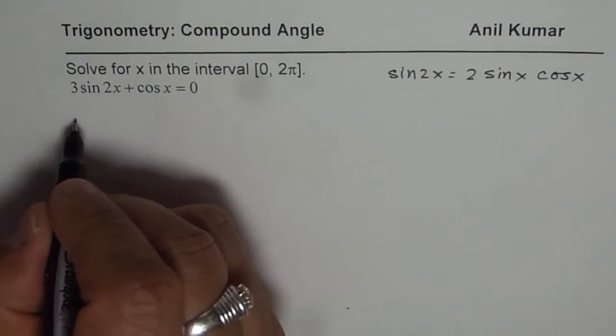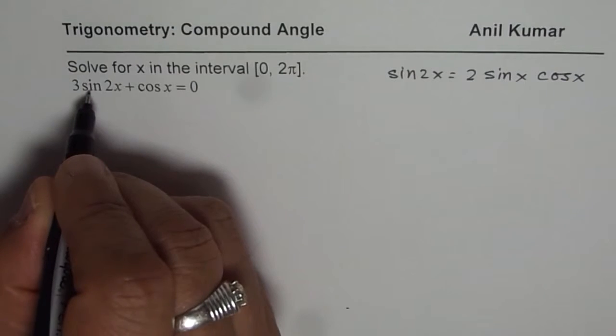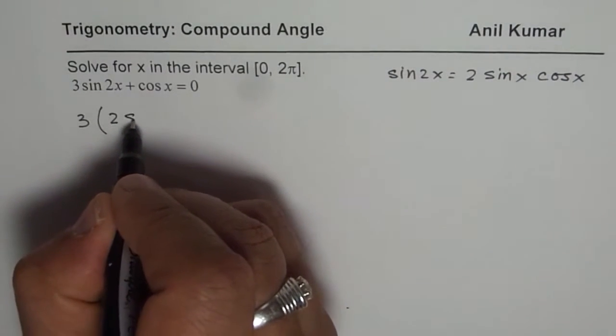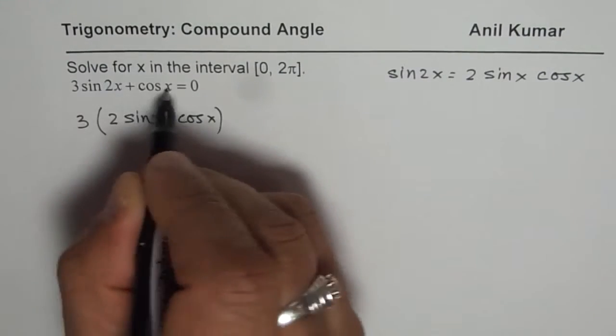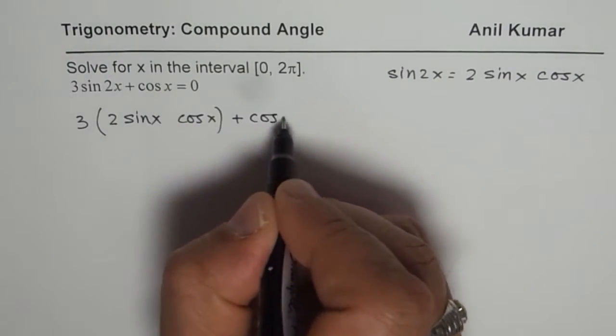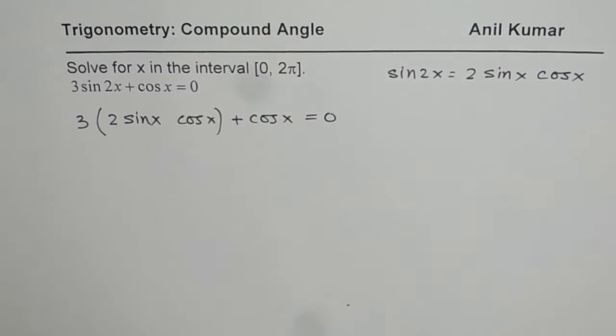So we can write our equation as 3 times, instead of sin2x, we can write this as 2 times sinx cosx plus cosx equals to 0. That becomes our equation.